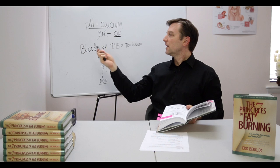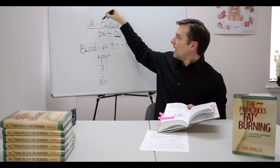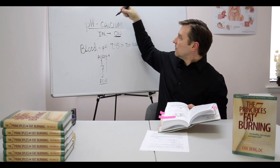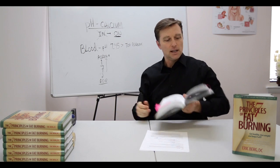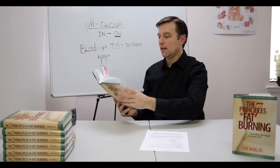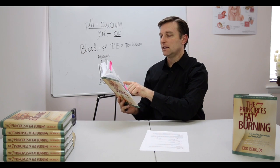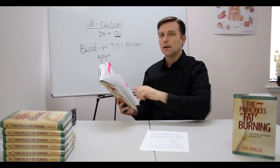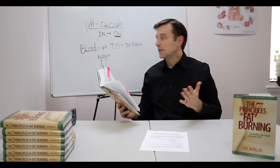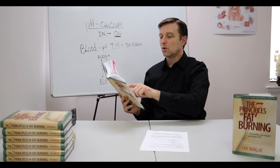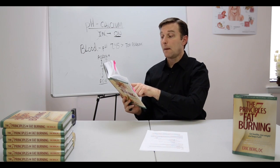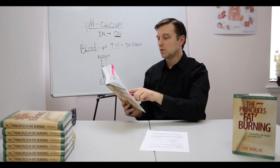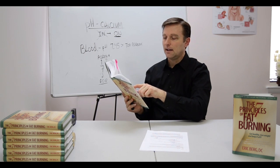When the blood is overly alkaline, you're going to have a big problem with calcium. Calcium will no longer go into the body properly — instead it goes onto the tissues. It develops on the nerves as neuritis, on the heels as heel spurs, on the joints as arthritis, on the bursa as bursitis — that's a little sack around the joints — and on the tendons as tendonitis.